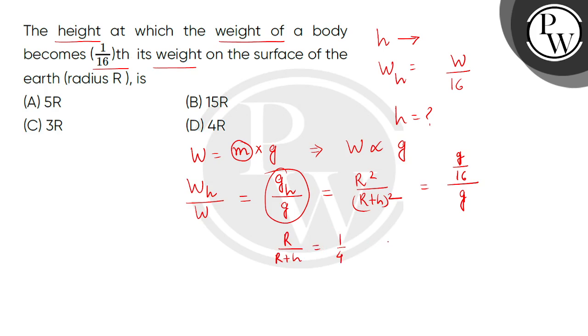So I root, cross multiply. 4R is equal to R plus h, so the value of height is 3 times R. So correct answer is C. Thank you.